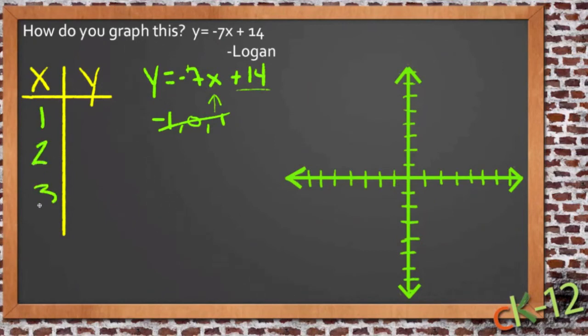So if we start with x equals 1 and we put 1 into our equation, we'll have y equals negative 7 times 1 plus 14, so negative 7 times 1 is negative 7, and negative 7 plus 14 would be positive 7. So yep, that's the one we guessed at right there, so we should have a point right there.